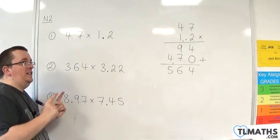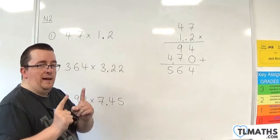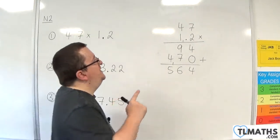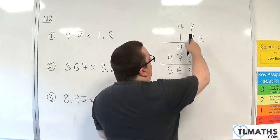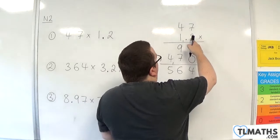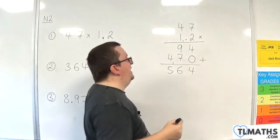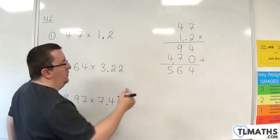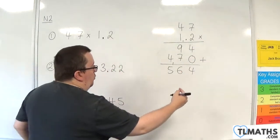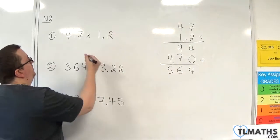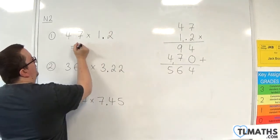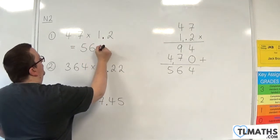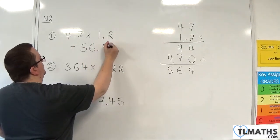Now we need to put the decimal point back in. In total we've got one number to the right of the decimal point, so we need to bring the decimal point in one place. So the answer is 56.4.